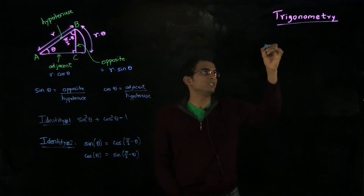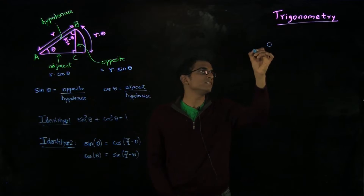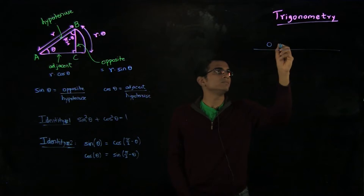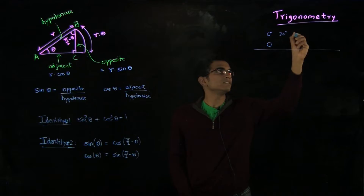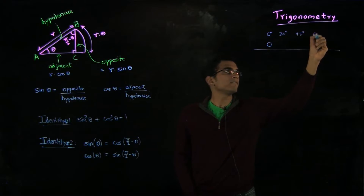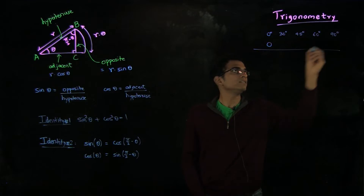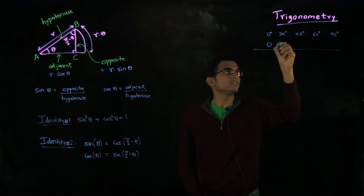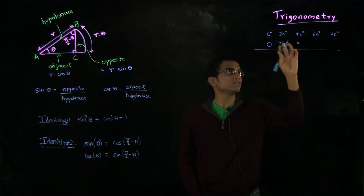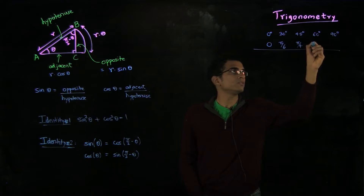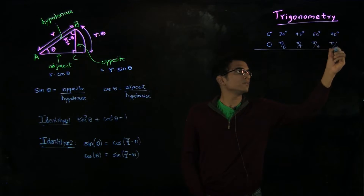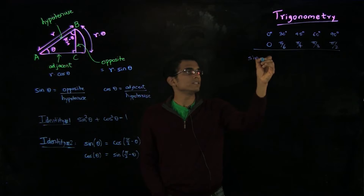Let me draw a table here. The angles we consider will be 0 degrees, 30 degrees, 45 degrees, and 90 degrees. In radians, these are Pi by 6, Pi by 4, Pi by 3, and Pi by 2. We will study the sine and cosine of each angle.